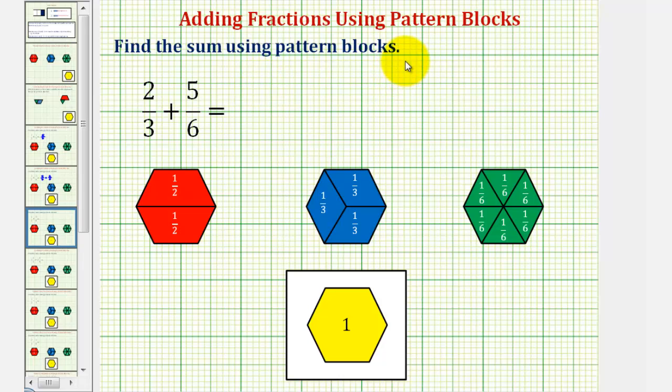We want to find the sum using pattern blocks. We have two-thirds plus five-sixths, and we define one yellow pattern block, or one yellow hexagon, as one whole.